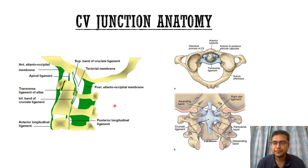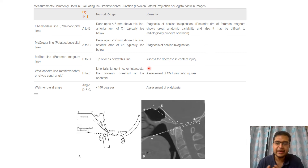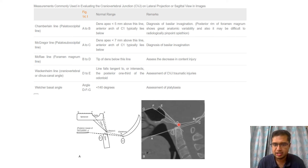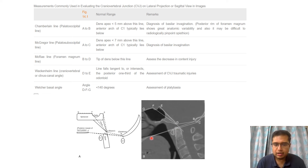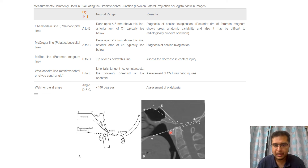Now discussing important measurements and lines to diagnose CVJ anomalies. McRae's line, or foramen magnum line, extends from basion to opisthion — the tip of the clivus to the tip of the occipital bone. The tip of the dens should be below this line; in our case it was above, hence basilar invagination. McGregor's line extends from the posterior margin of the hard palate to the lower border of the occipital bone; the dens tip should not be more than 7 mm above this line.